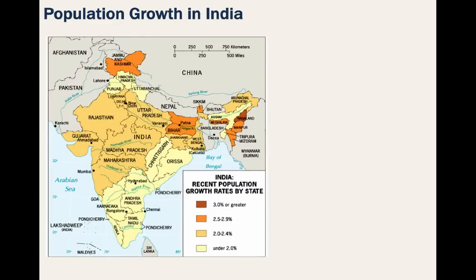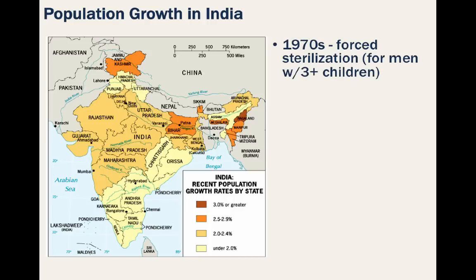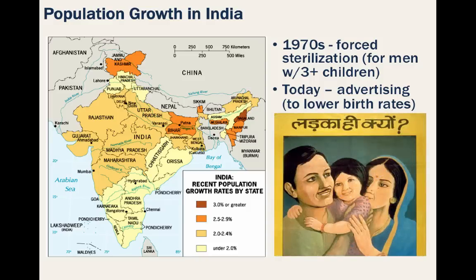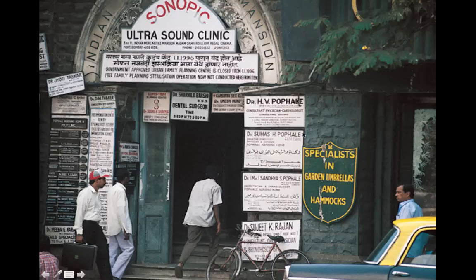Other countries also have restrictive policies, such as India, which is projected to surpass China as the world's largest population by the mid-21st century. In the 1960s, India started a family planning program, expanding it in the 1970s by forcing many men with three or more children to have vasectomies. However, being the world's largest democracy, people did not appreciate government interference, and this policy soon ended. Today, most Indian states use advertising and incentives to lower growth rates, especially in the north where birth rates are highest.